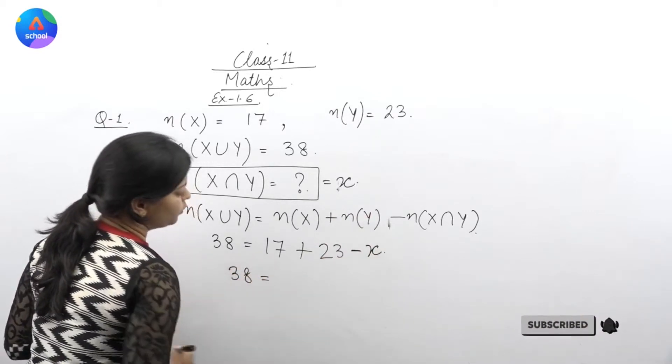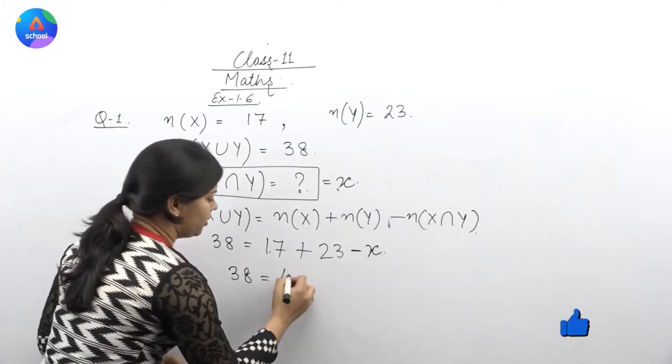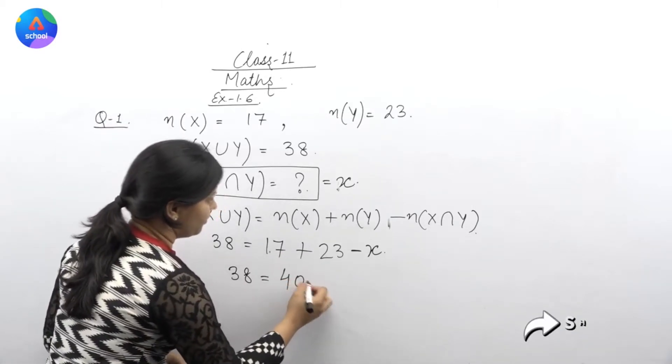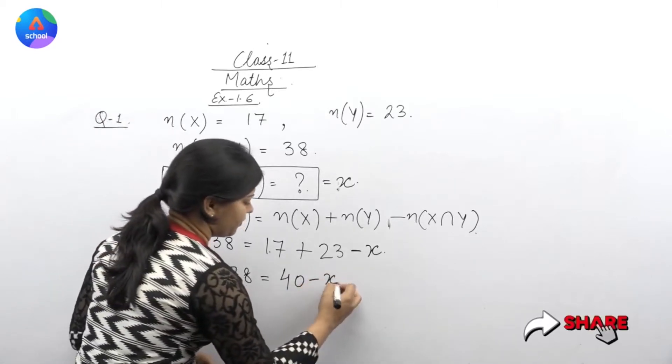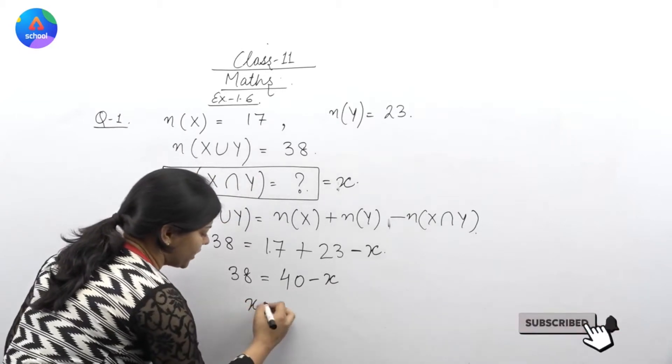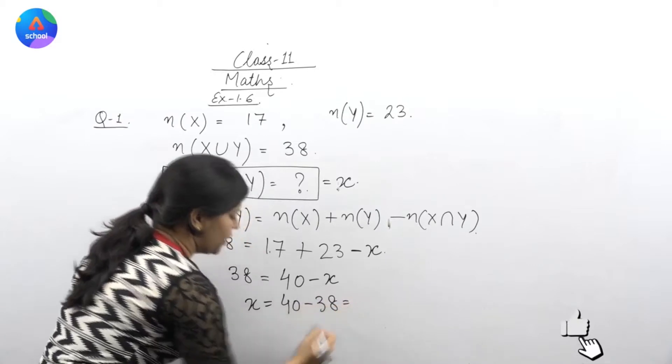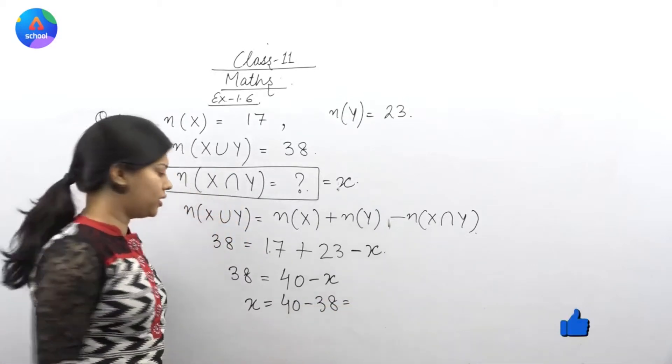38 is equal to 17 plus 23 is 40. Right? Minus x. We'll bring x to this side. So, x is equal to 40 minus 38. From here we will get the value of x. That is 2.